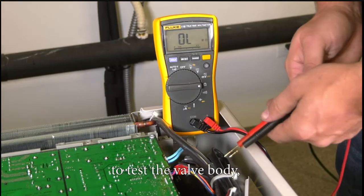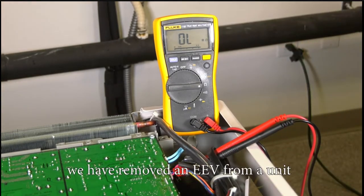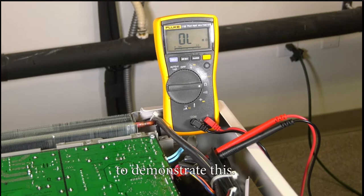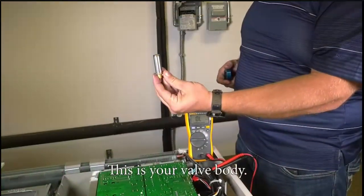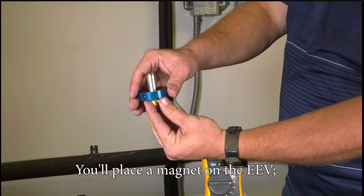Now to test the valve body, we have removed an EEV from a unit to demonstrate this. This is your valve body. You will utilize an EEV magnet and place the magnet on the EEV.